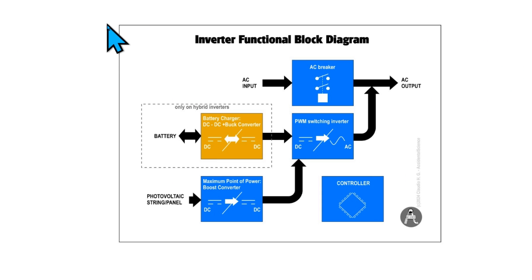This is the functional block of the inverter. Let's start from the AC input and we have the AC breaker. The AC breaker is controlled by the main controller of the inverter and it is used to detach the inverter from the grid when the power on the grid is gone or turned on when the power goes back.